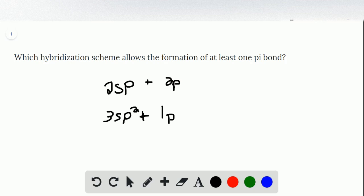Both of these would allow the formation of at least one pi bond, in the sp case two pi bonds, in the sp2 case only one.